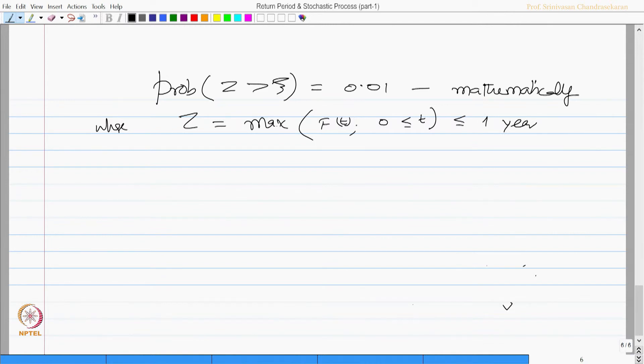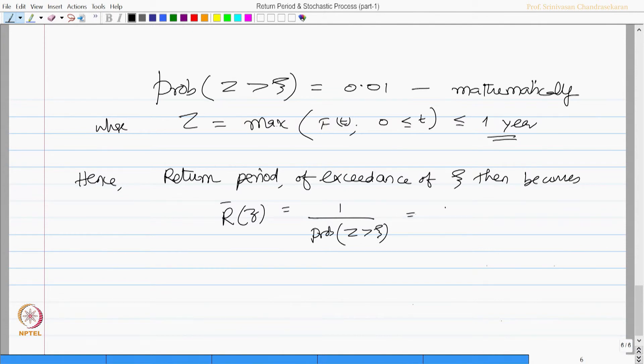Because the probability of exceedance of this value of 10 power minus 2 is for 1 year, hence return period of exceedance of zeta then becomes r bar of z equals 1 by probability of z exceeding zeta is 1 by 0.01 which is 100 years.